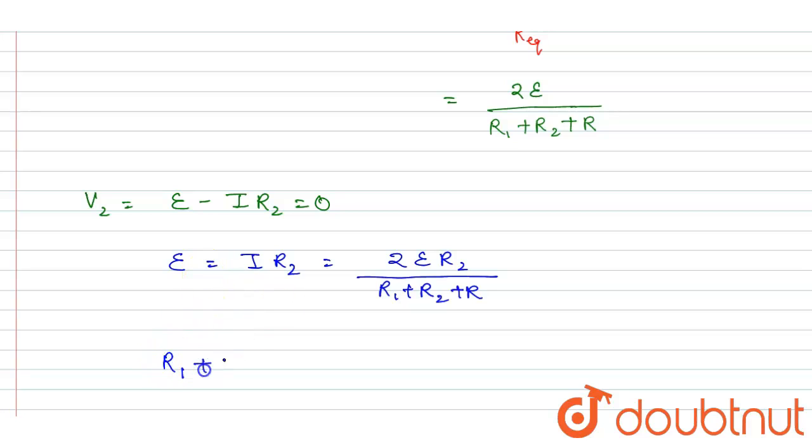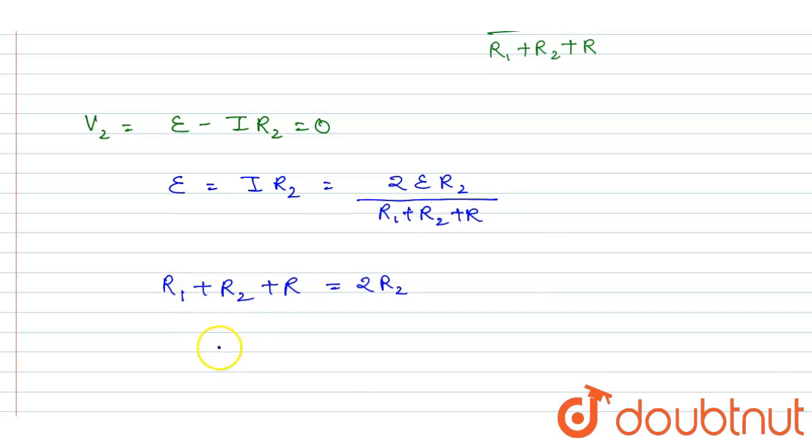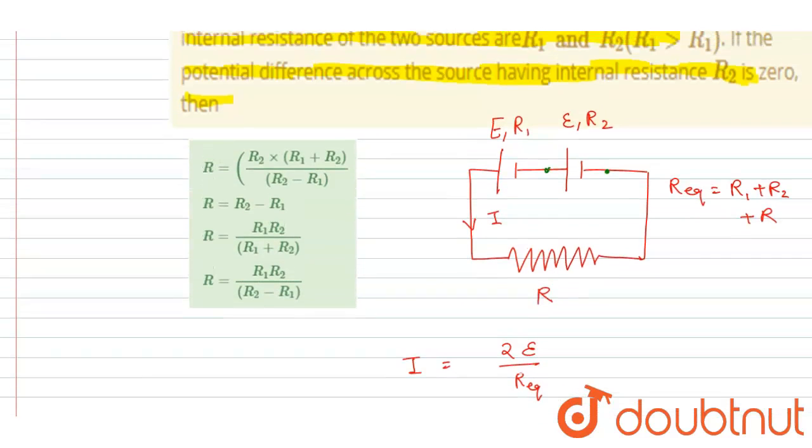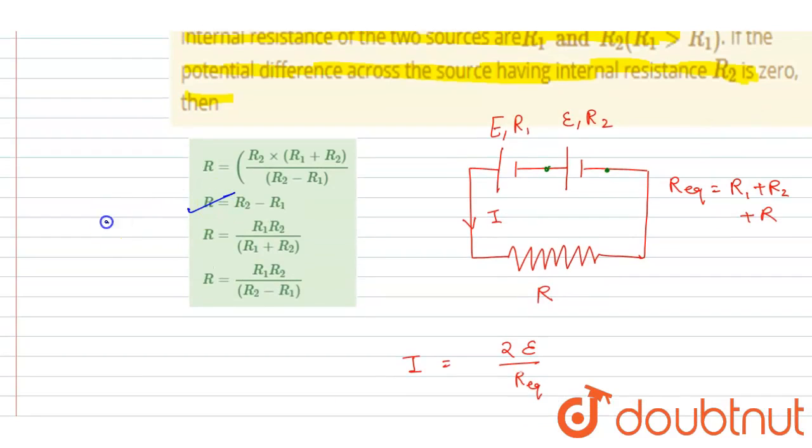And I will write R1 plus R2 plus R equals 2R2. So I will write R equals R2 minus R1, and this will be the relation between R1, R2, and R. Now if you see, R2 minus R1 is option B, so B is the correct one. Thank you.